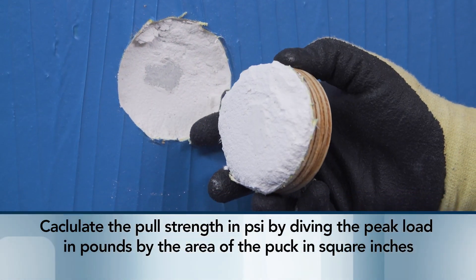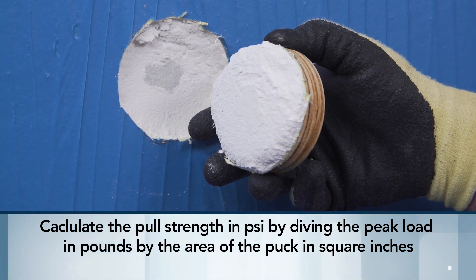Calculate the pull strength in psi by dividing the peak load in pounds by the area of the puck in square inches.